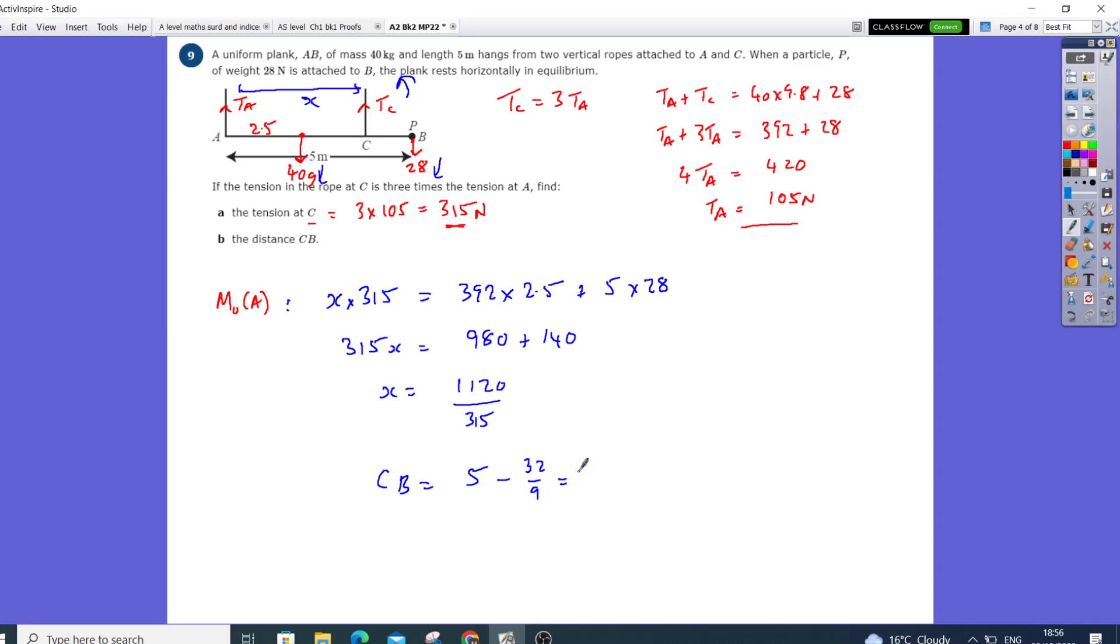Which is 5 minus that, giving me 13 over 9 meters, which is 1.44 meters to three significant figures. So 1.44 meters.